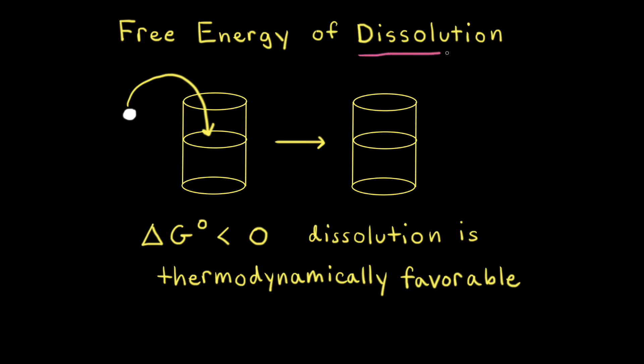The term dissolution refers to the dissolving of one substance in a solvent. The dissolved substance is now called a solute, and the solute plus the solvent form a solution. If the standard change in free energy, delta G-naught, is less than zero, the dissolution is thermodynamically favorable.